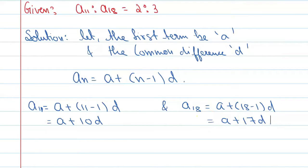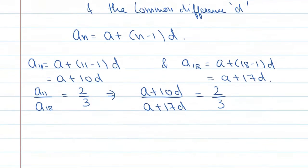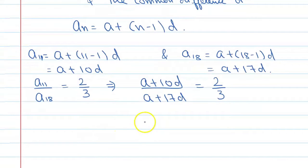And according to the question, what we can say is that A11 upon A18 is equal to 2 upon 3. It is equal to 2 upon 3.